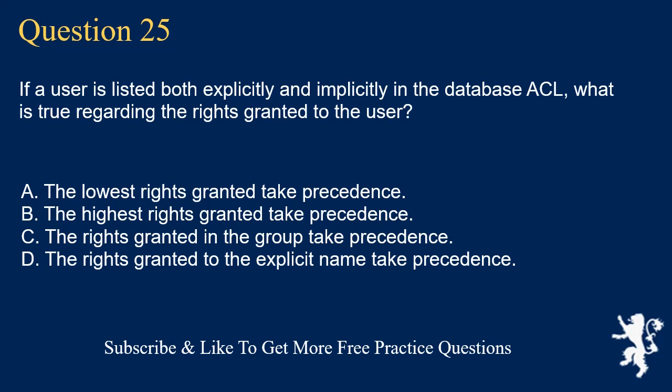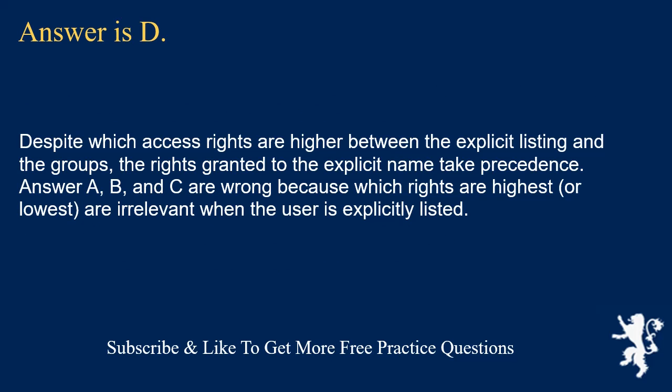Question 25. If a user is listed both explicitly and implicitly in the database ACL, what is true regarding the rights granted? The lowest rights granted take precedence. The highest rights granted take precedence. The rights granted in the group take precedence. The rights granted to the explicit name take precedence. Answer is D. Despite which access rights are higher between the explicit listing and the groups, the rights granted to the explicit name take precedence. Answers A, B, and C are wrong because which rights are highest or lowest are irrelevant when the user is explicitly listed.